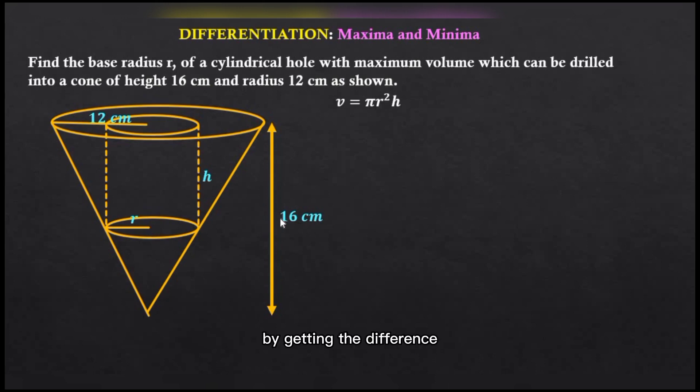We can determine the height of the smaller cone by getting the difference between the height of the bigger cone and the height of the cylinder, that is 16 centimeters minus h. So we have 16 - h.